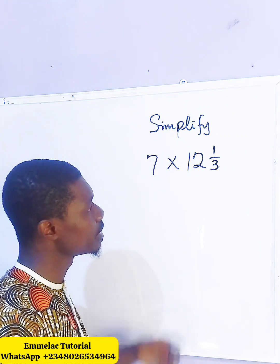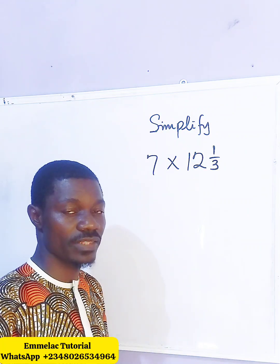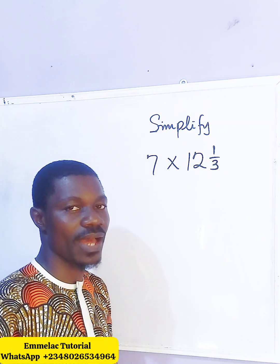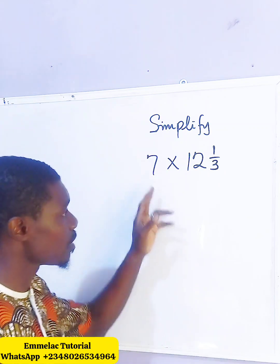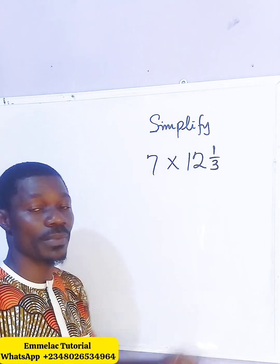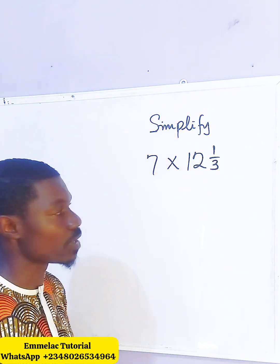How do we simplify the product of a whole number and a mixed fraction? Here we have 7 multiplied by 12 and 1/3. How do we go about it?